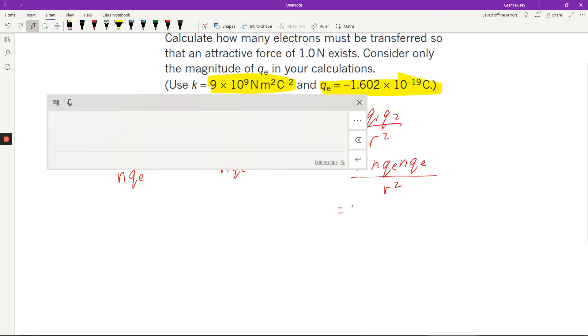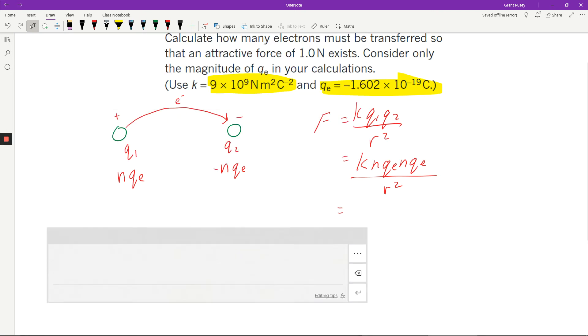Then another Qe, and that divided by R squared. And once I've got that, I can just put that down to be 9 times 10 to the 9 times N squared times Qe squared, and divide that by R squared. And R squared being 0.3 squared.